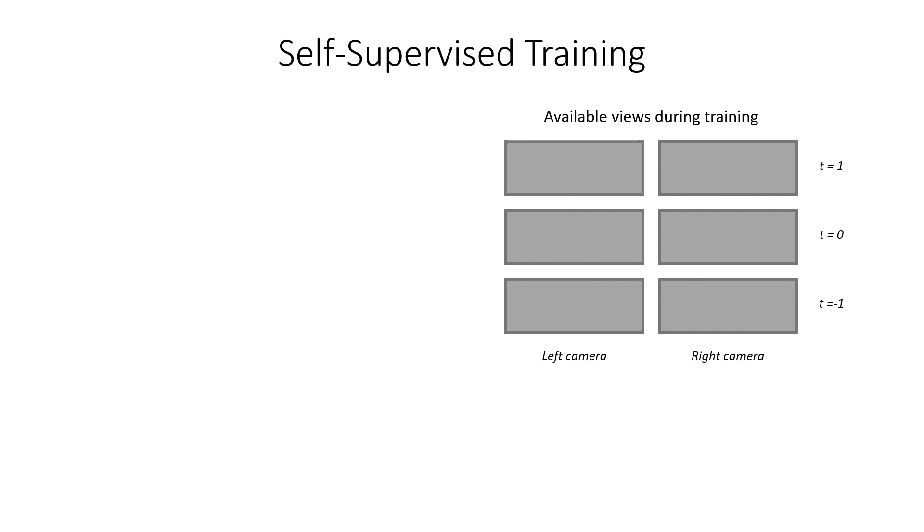We train our method through a new self-supervised reconstruction loss. During training, we have available video data with one or multiple views per time step. A single sample consists of frames from a few consecutive time steps, for example three.